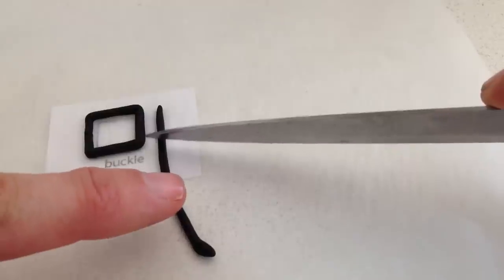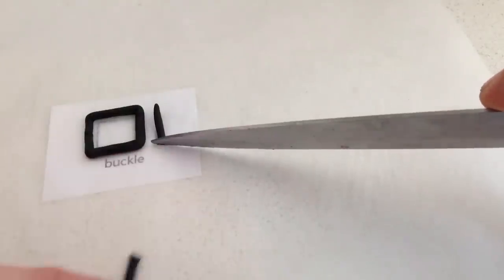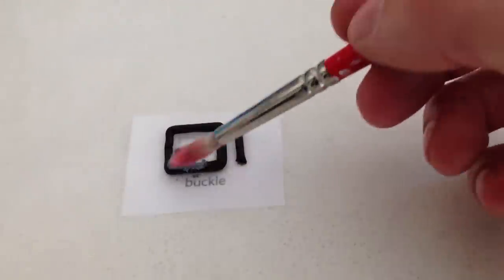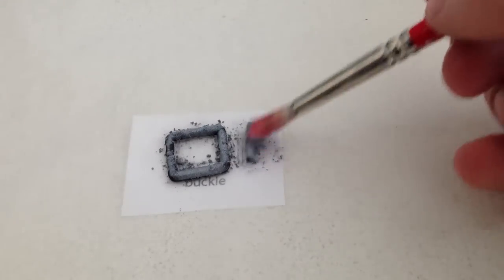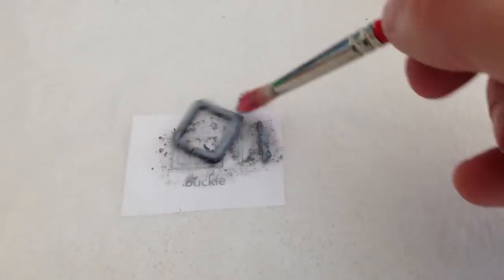Then use an off-cut to make the prong of the buckle. Take a dry paint brush and dust that fondant with silver luster dust on all the sides and all the way over the whole thing. Then leave the buckle to one side to dry.